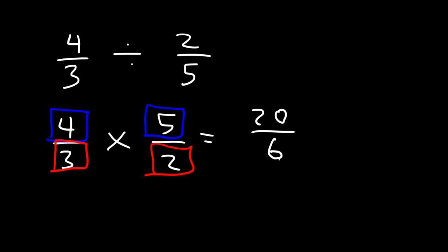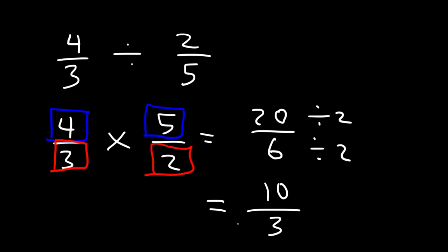Now what we need to do is reduce 20 over 6. Since both numbers are even, we can divide both by 2. 20 divided by 2 is 10, and 6 divided by 2 is 3. So the answer is 10 over 3.